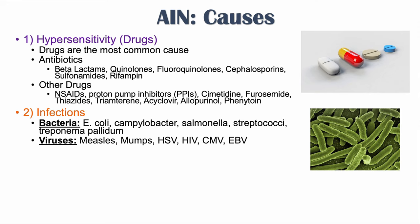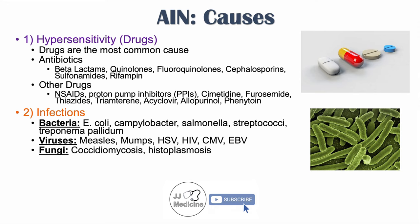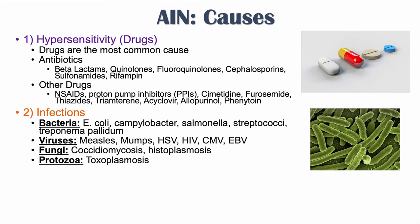Certain viral infections can cause acute interstitial nephritis, including measles, mumps, herpes simplex virus, HIV, cytomegalovirus, and Epstein-Barr virus. Fungal infections like coccidioidomycosis and histoplasmosis are also potential causes, as are protozoal infections like toxoplasmosis.